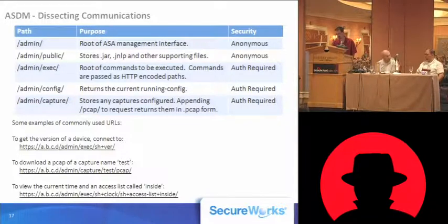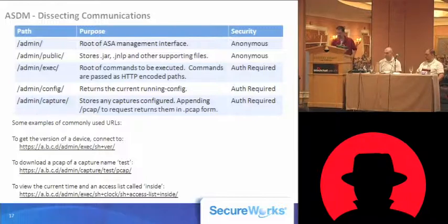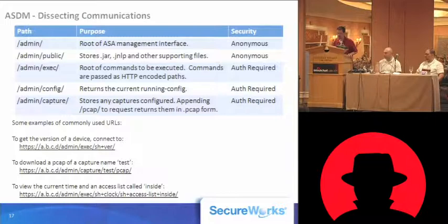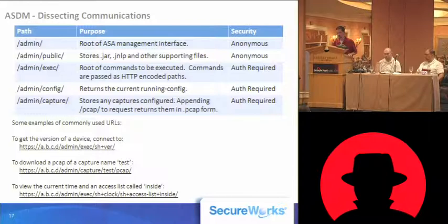Here's a summary of the different URLs that ASDM uses to communicate with the firewall. We've got an admin directory as well as an admin public directory, which basically store the Java files and helper files given to the client. These are accessible anonymously — they're basically public directories. The remaining directories all require authentication, and this is always done with HTTP basic auth.